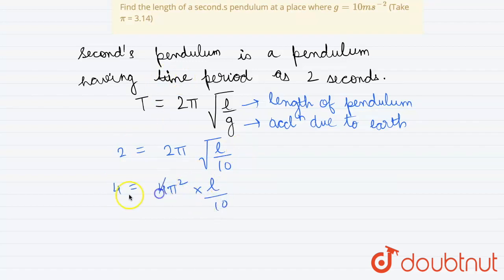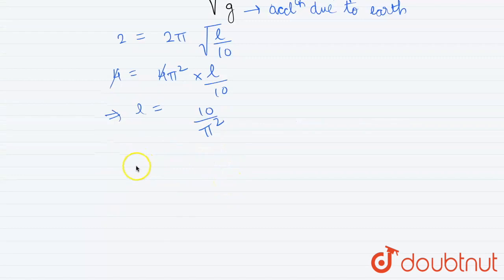Cancelling out 4 here implies that l equals to 10 upon π square. Now the value of π given in the question is 3.14. Solving this we get l to be 1.014 meters.